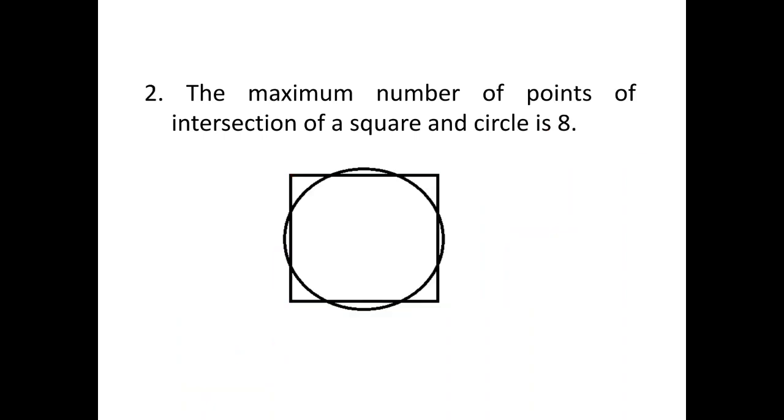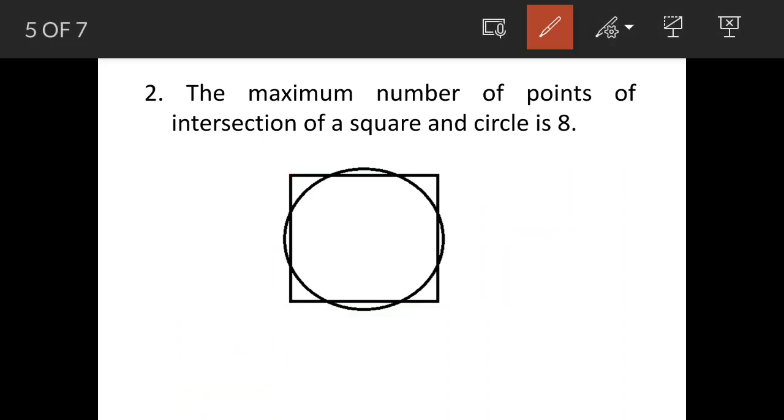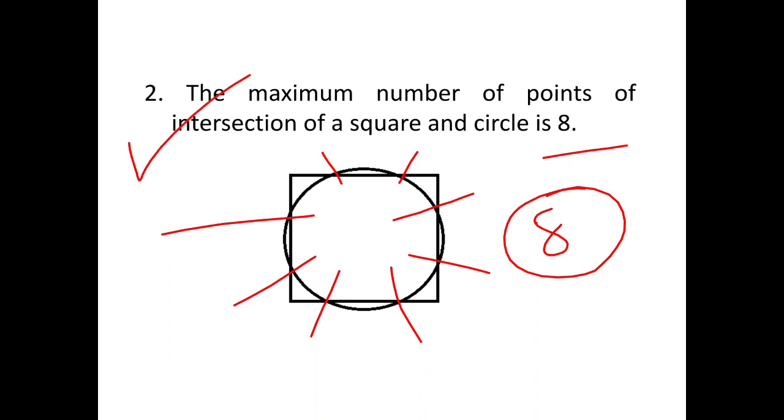Now we'll see statement two. The statement two says maximum points are eight. So where the circle is actually overlapping the square, then you can count: one, two, three, four, five, six, seven, eight. So each side actually is intersecting at two places, so total eight such points are there. And this statement is also correct.